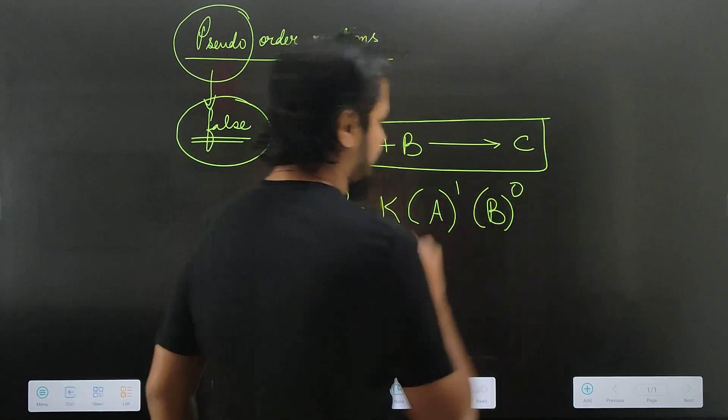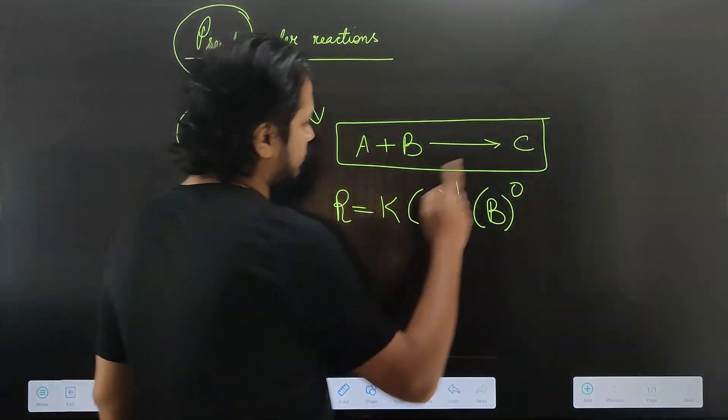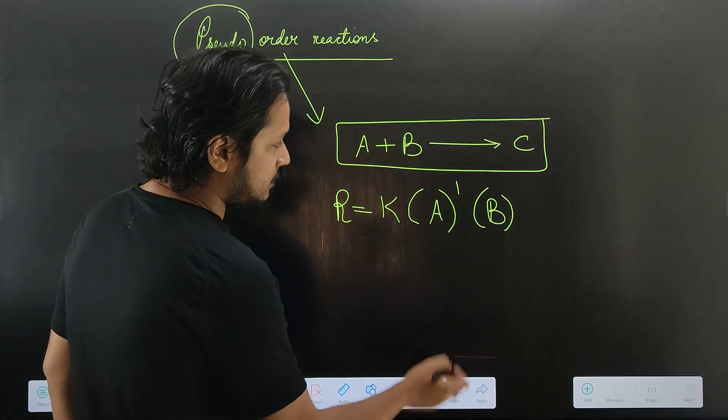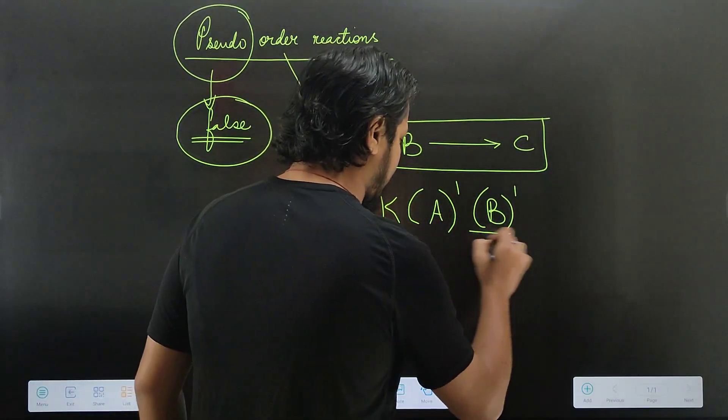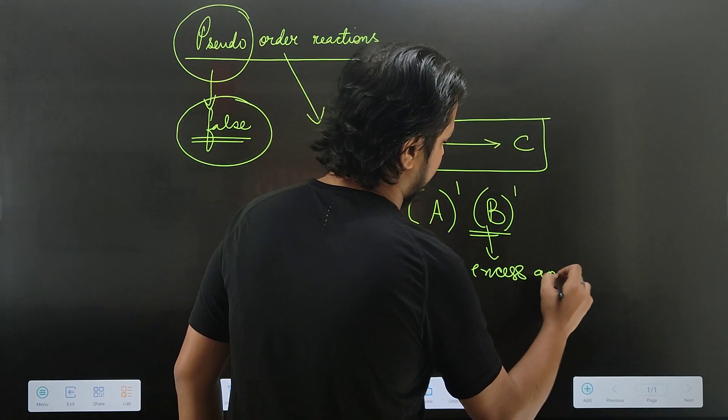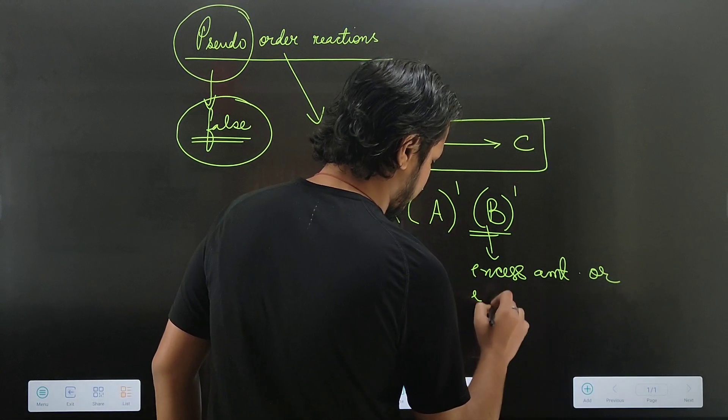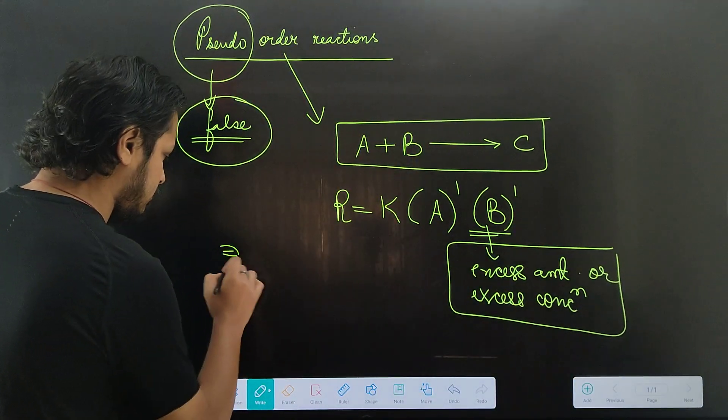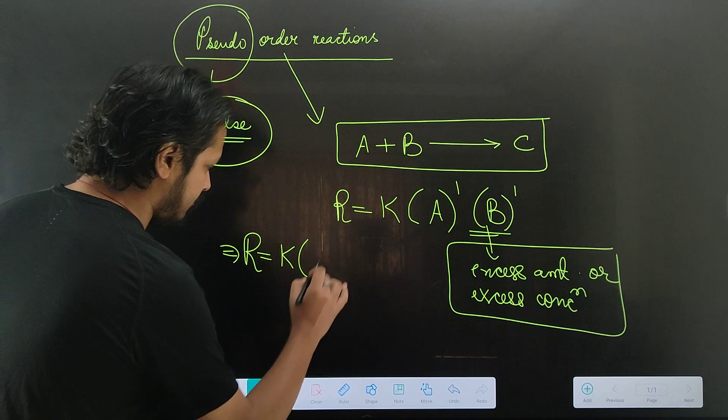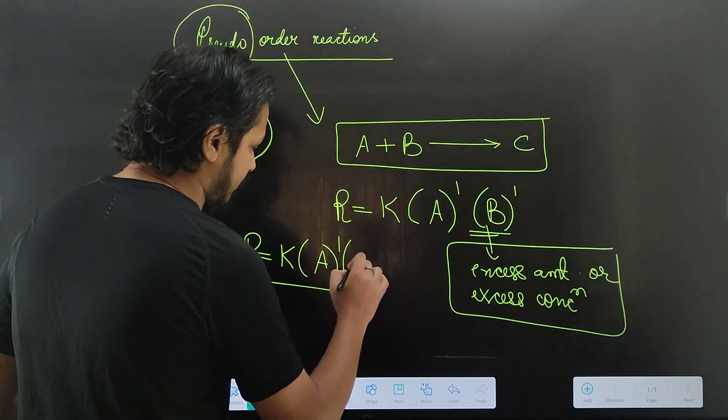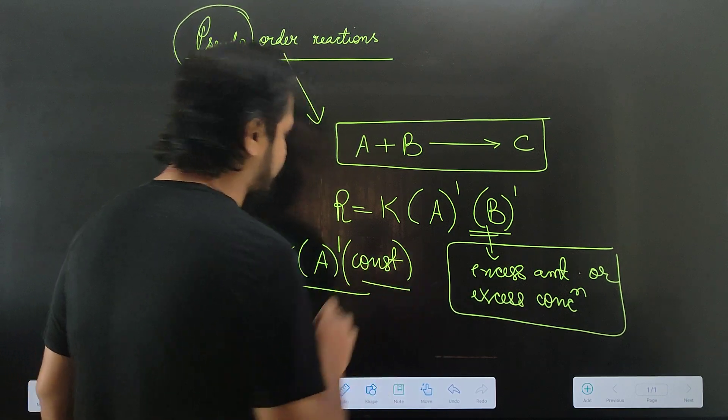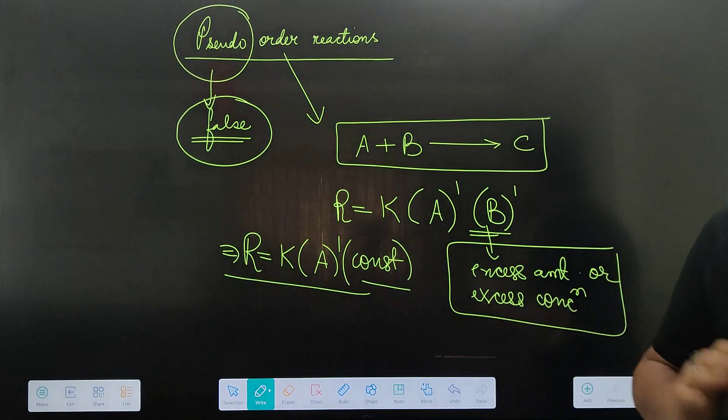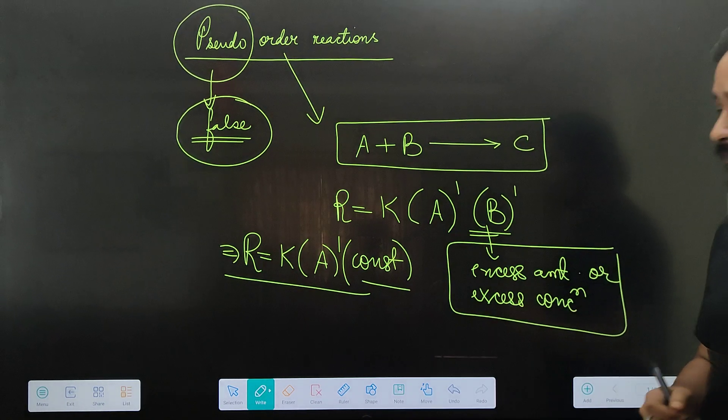What is the reaction? A plus B gives you C. So, the rate is equal to K times A to the power 1 times B to the power 2.